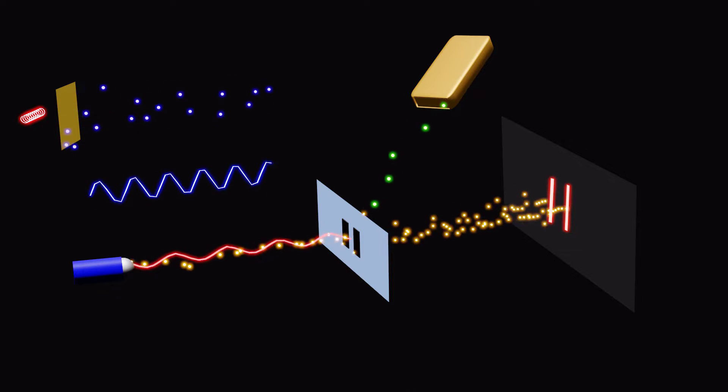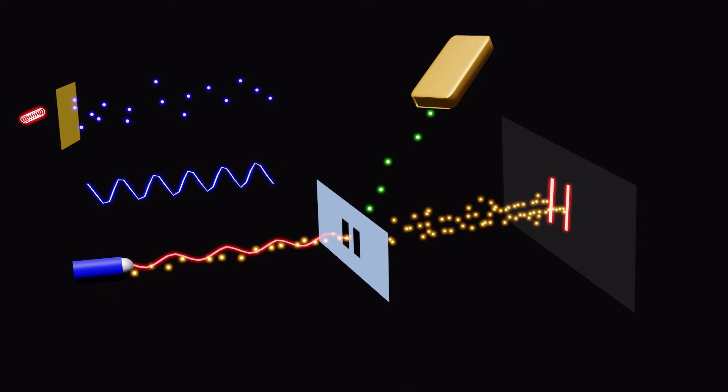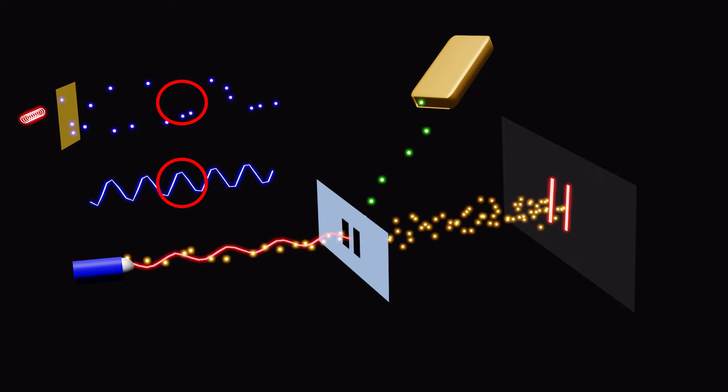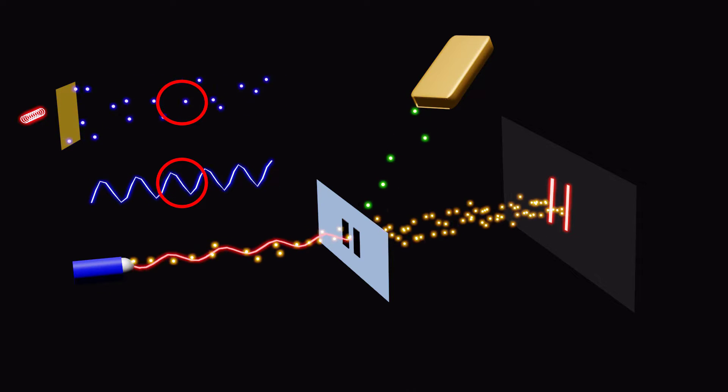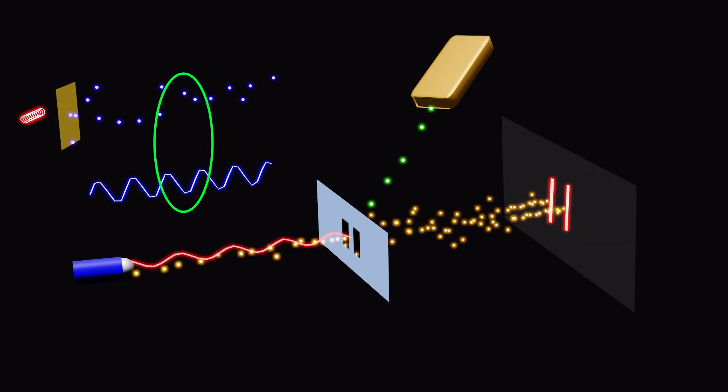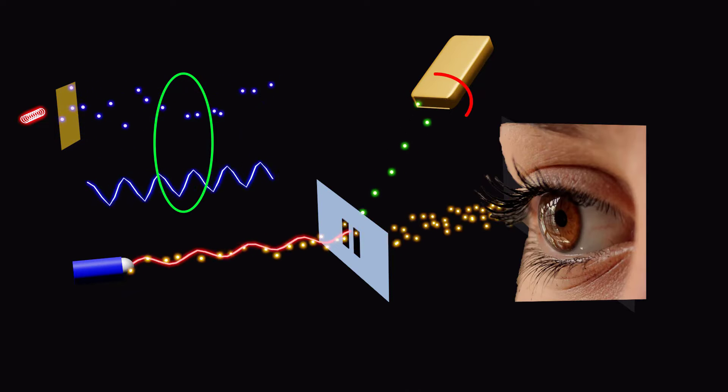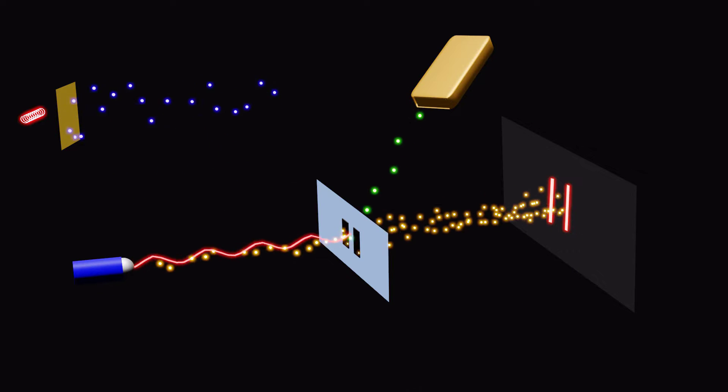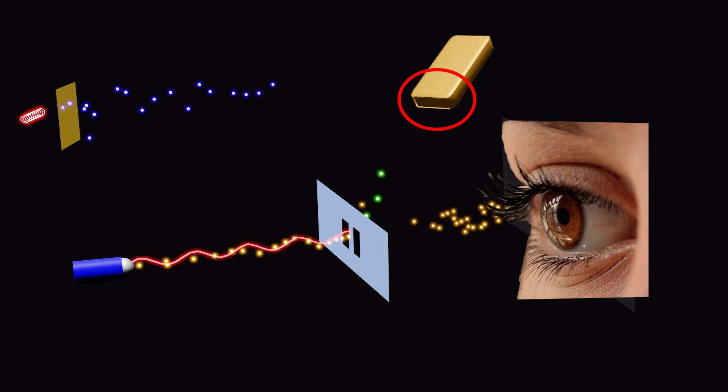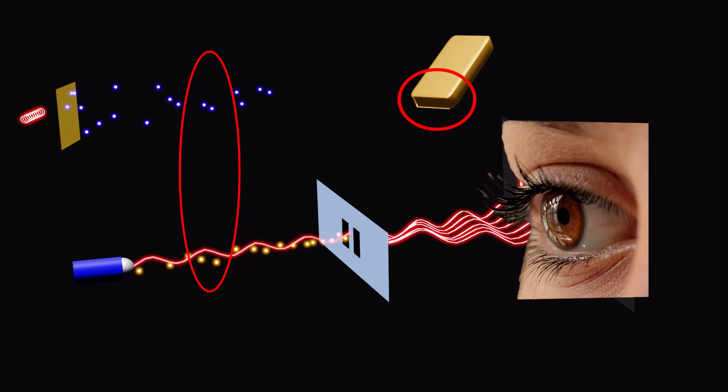It challenges our classical understanding of the world, where objects are either waves or particles. In the quantum world, objects can exhibit both wave-like and particle-like behavior depending on how they are observed or measured. The process of measurement or observation can influence the nature of matter and energy.